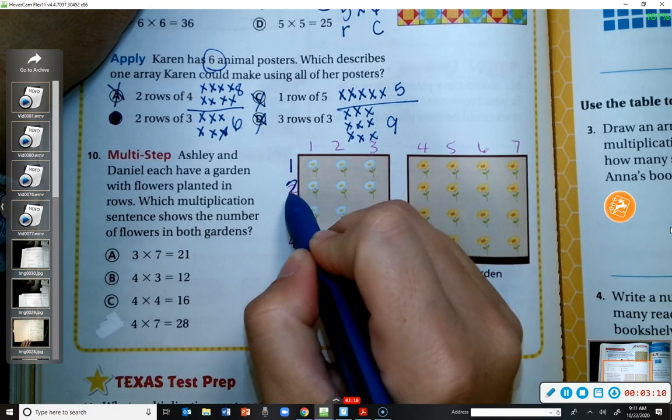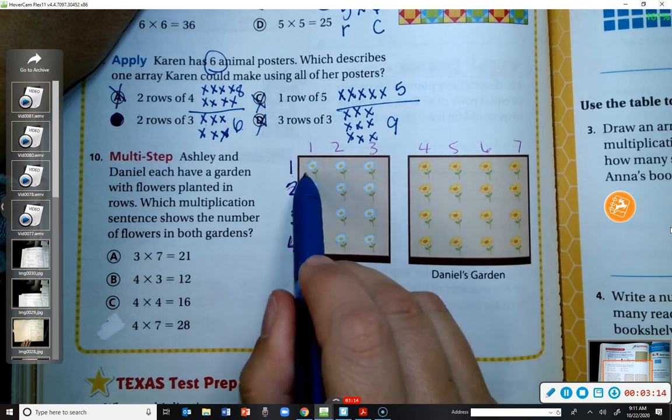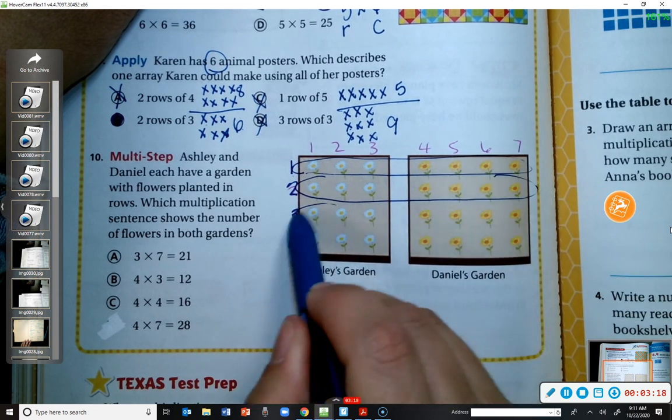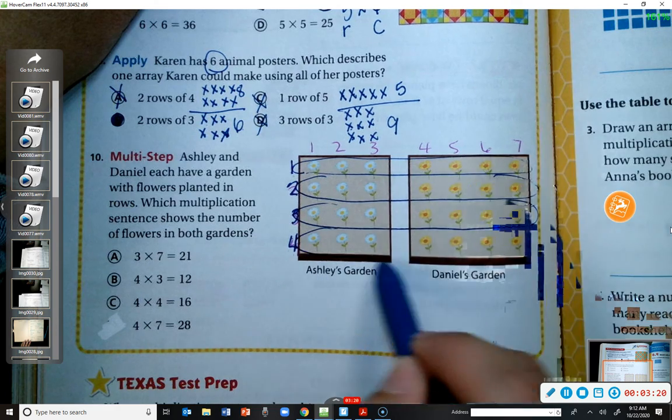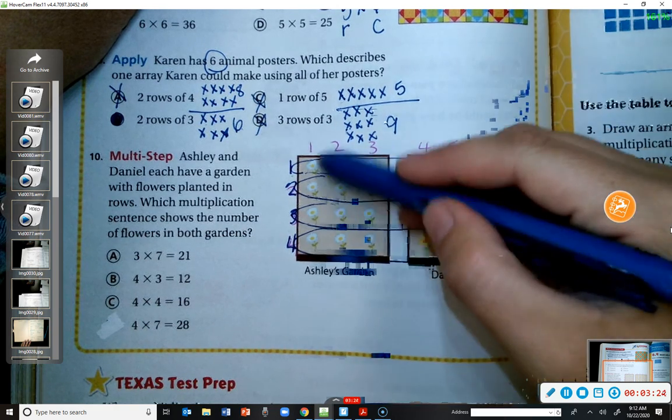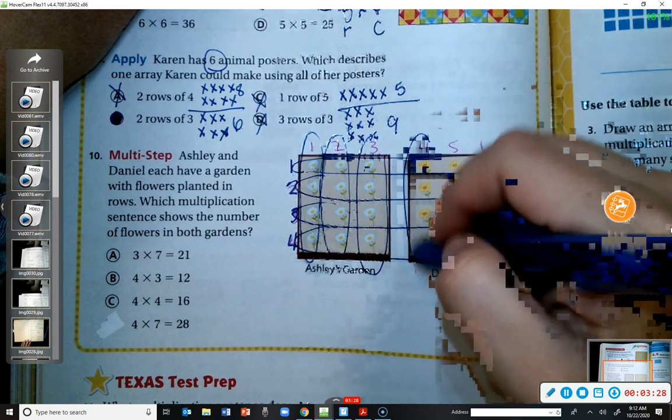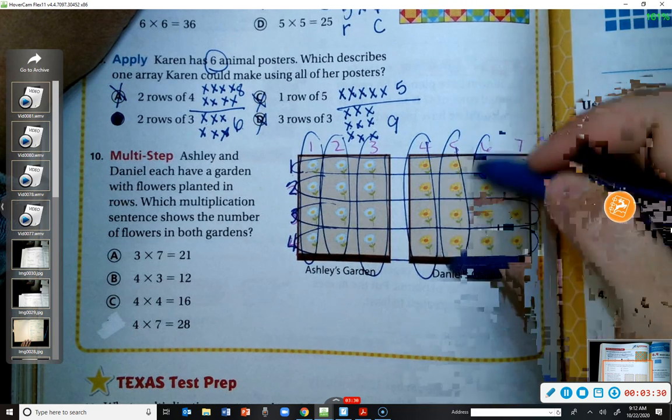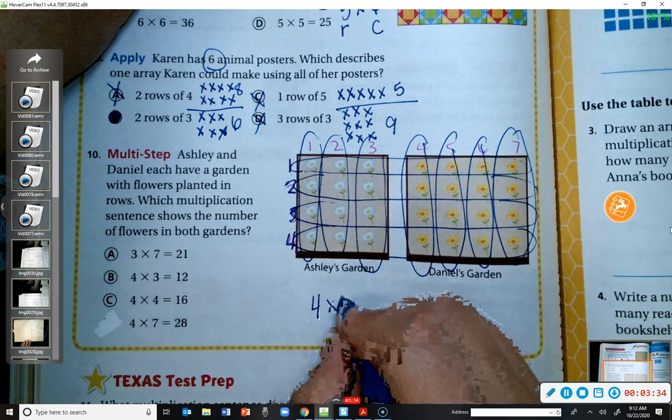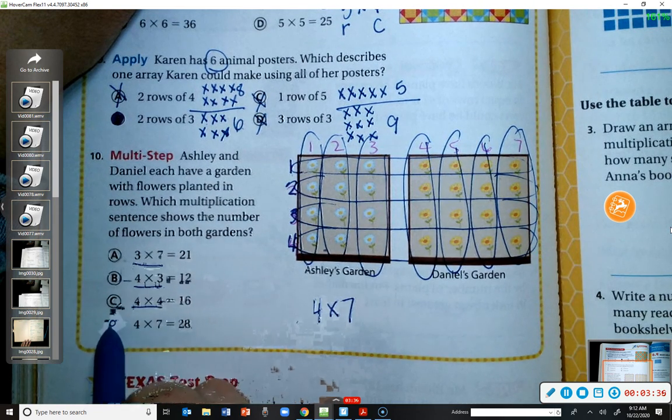I have one, two, three, four rows. See the rows? Two, three, four rows. And then if I combine both of these, I have one, two, three, four, five, six, seven columns. So four times seven. The only one that has the correct factors was D.